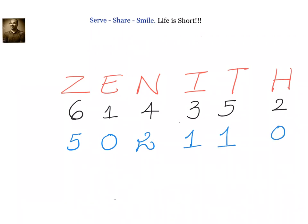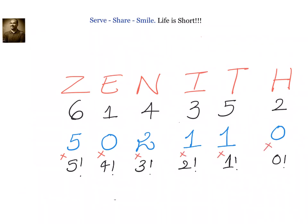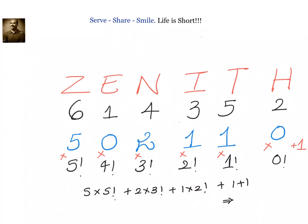The next step: starting from right to left, assign factorial 0, factorial 1, factorial 2, factorial 3, factorial 4, and factorial 5, and multiply them respectively. So we get: 5 × 5! + 2 × 3! + 1 × 2! + 1 + 1. This is equal to 5 × 120 = 600, plus 2 × 6 = 12, plus 2. This is the same result we got with the general method.